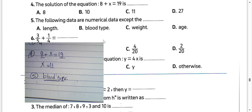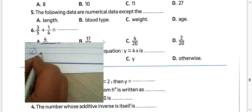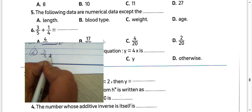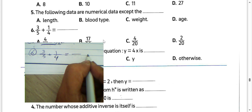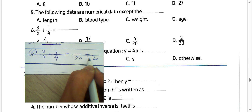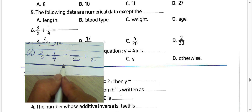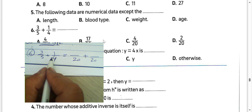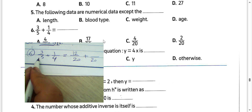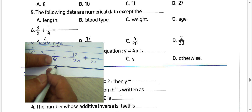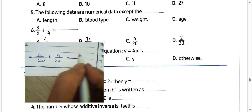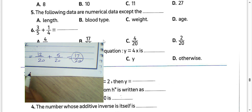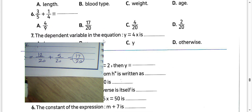Number 6: C over 5 plus 1 over 4. We find the least common multiple of 4 and 5. Since 4 and 5 are relatively prime numbers, the LCM will be 20. Then 4 times 3 is 12, and 1 times 5 is 5. The sum of them will be 17 over 20. Letter B.